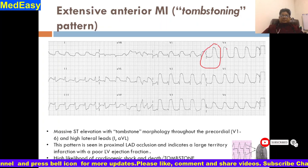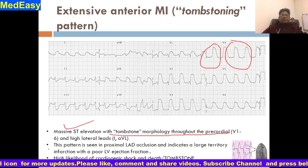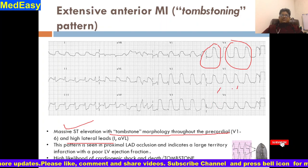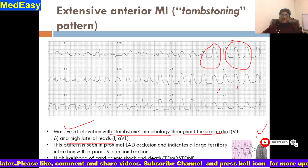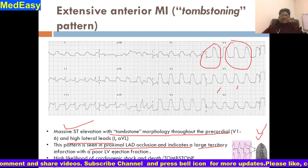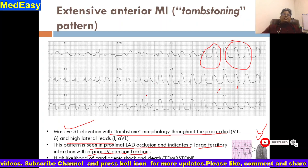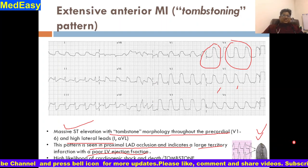This is the typical tombstone pattern — massive ST elevation with tombstone morphology seen from V1 to V6 and the high lateral leads. This pattern is seen in proximal LAD occlusion and indicates a large territory infarct with poor LV ejection fraction. There is huge damage to the myocardium leading to very poor ejection fraction.